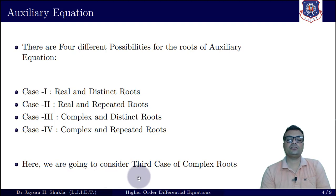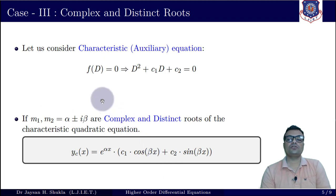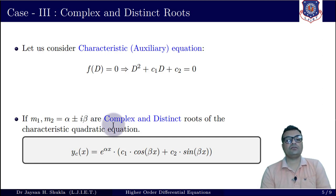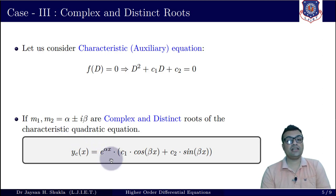Let us focus on this third case of complex roots. Suppose the auxiliary equation f(D) = 0 gives complex roots. We know that complex roots always come in pairs of the form α ± iβ. If we have only two such complex roots, the complementary function takes the shape: e^(αx) · [c1·cos(βx) + c2·sin(βx)], where α is the real part and β is the imaginary part of the complex roots.